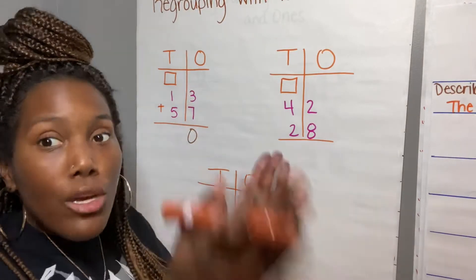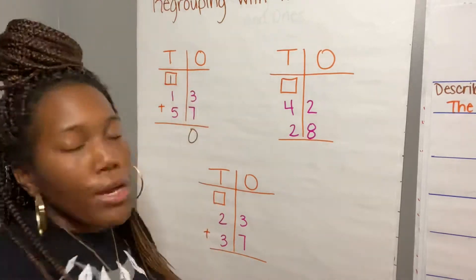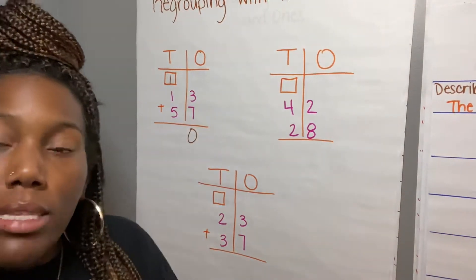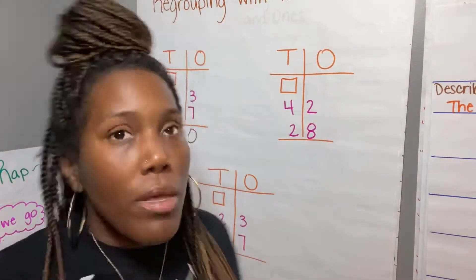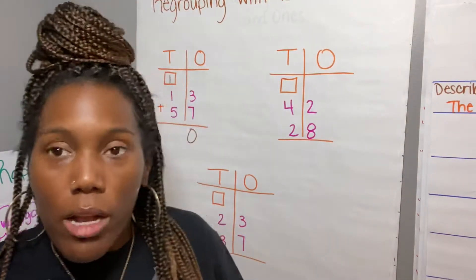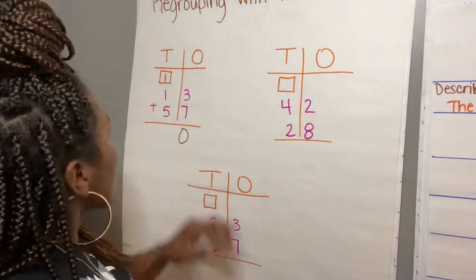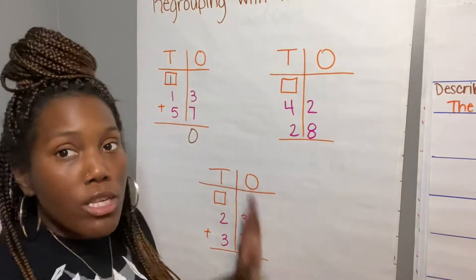Remember, the box is not always going to be there, but there is always a space for you to just put another tick mark up there for that 1 that you're regrouping. Then I'm going to move on over to my tens place now and add everything up. What makes this easier for me sometimes is to just do it from top to bottom.